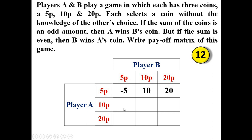Next, for player A with 10 paise and player B with 5 paise, the sum is 15 paise — odd — so A wins; the value is plus 5 (B's coin). For player A with 10 paise and player B with 10 paise, the sum is 20 paise — even — so B wins; the value is minus 10 (A's coin).